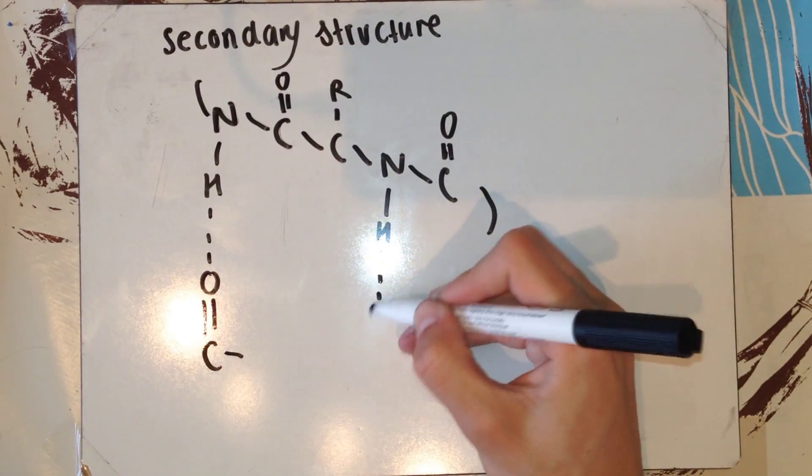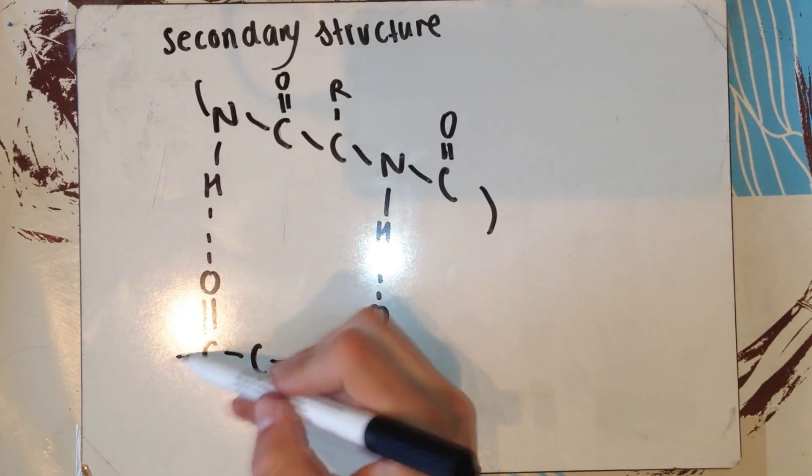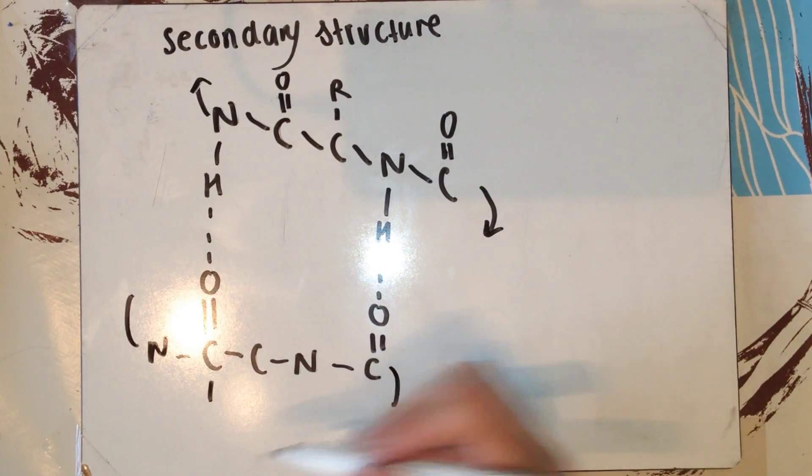However, these are hydrogen bonds between the same polypeptide, just different amino acids down the line of the helical twist. This provides extra strength and structure.